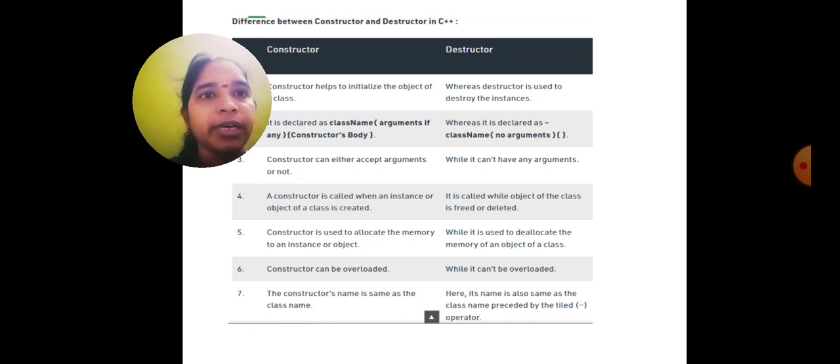A constructor is called when an instance or object of a class is created. It is called while object of the class is freed or deleted. Constructor is used to allocate memory to an instance or object, while destructor is used to deallocate the memory of an object of a class.